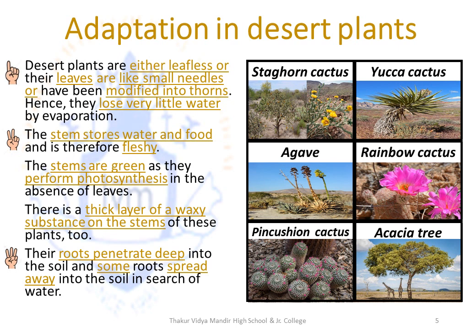Adaptations that take place in desert plants: Desert plants are either leafless, or their leaves are like small needles, or have been modified into thorns — to prevent the loss of water due to evaporation. Their stems are fleshy because they store water and food for the plant and are green in color because they perform photosynthesis in the absence of leaves. There is a thick layer of a waxy substance on the stem of desert plants. The roots of desert plants penetrate deep into the soil in search of water, and some of their roots spread far away into the soil.